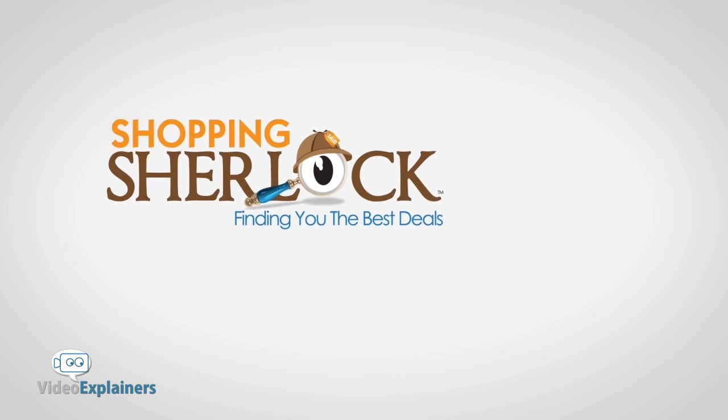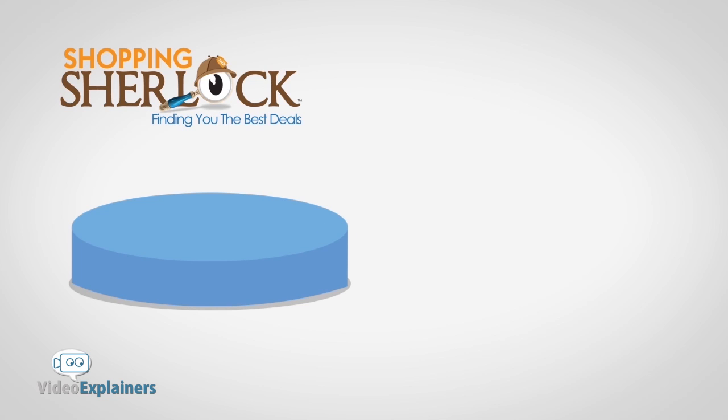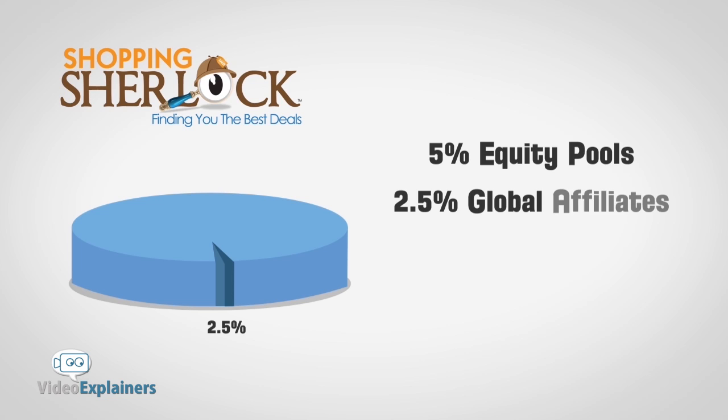Last up, Shopping Sherlock offers its affiliates the chance of earning a part of the company. 5% is given up to create two equity pools, 2.5% for Global Affiliates and 2.5% for Diamond Affiliates.